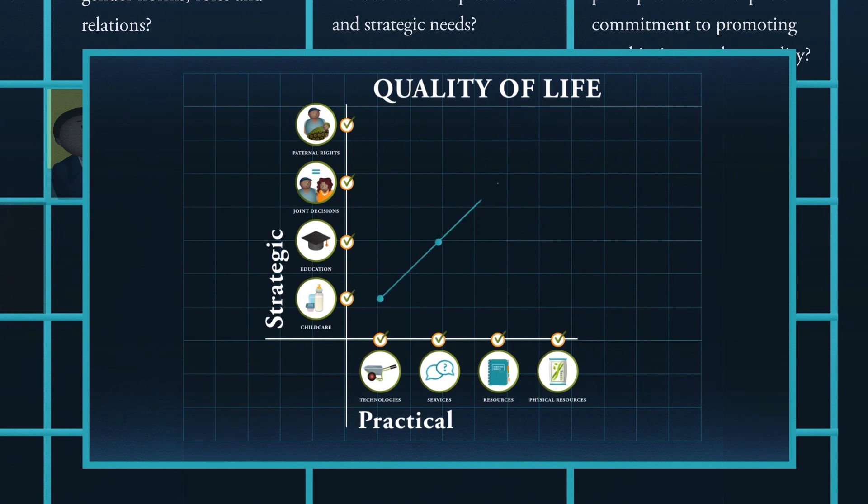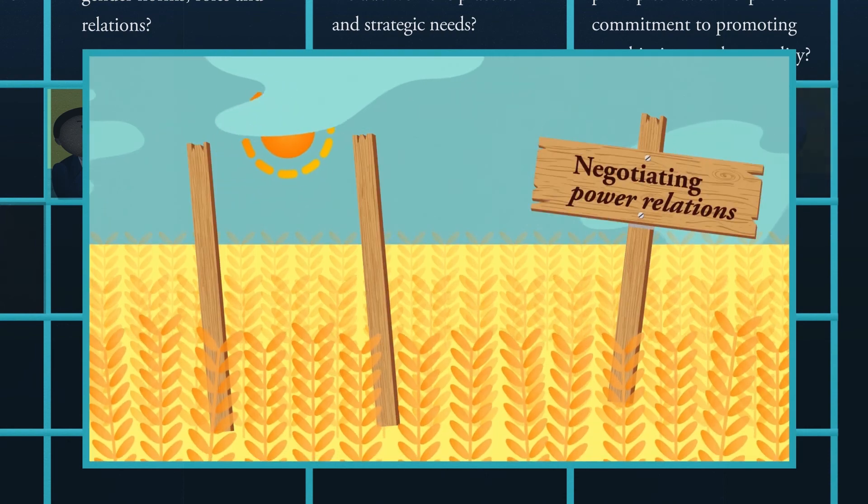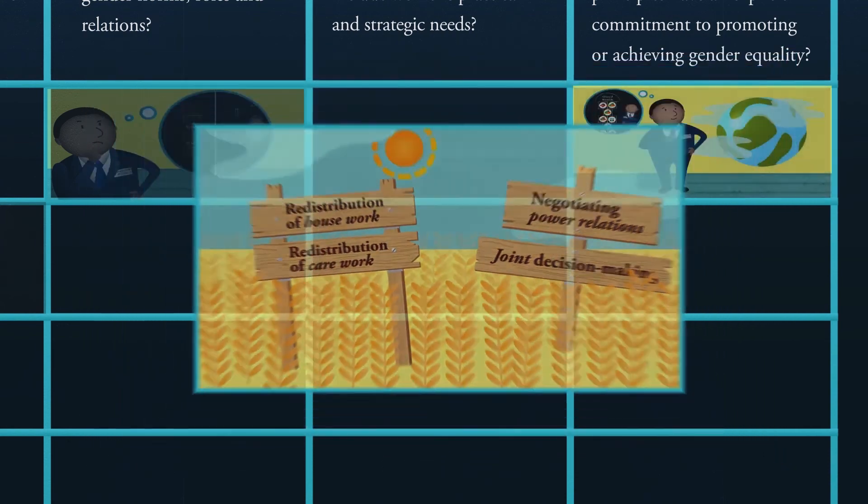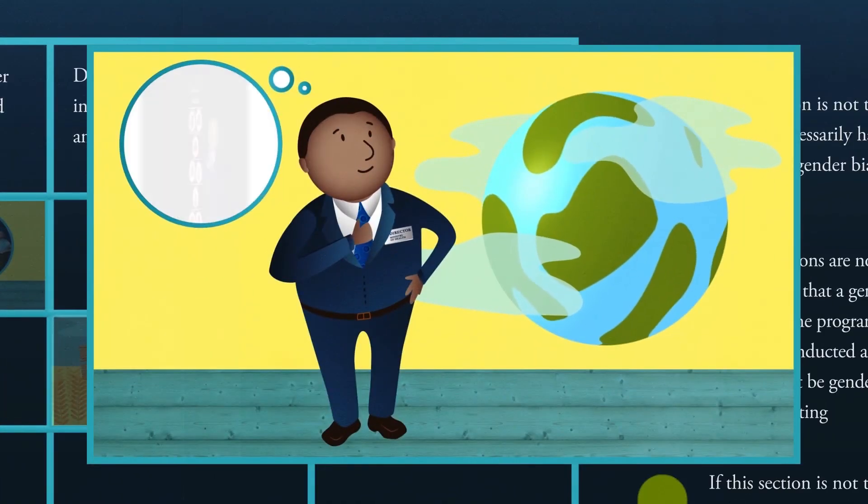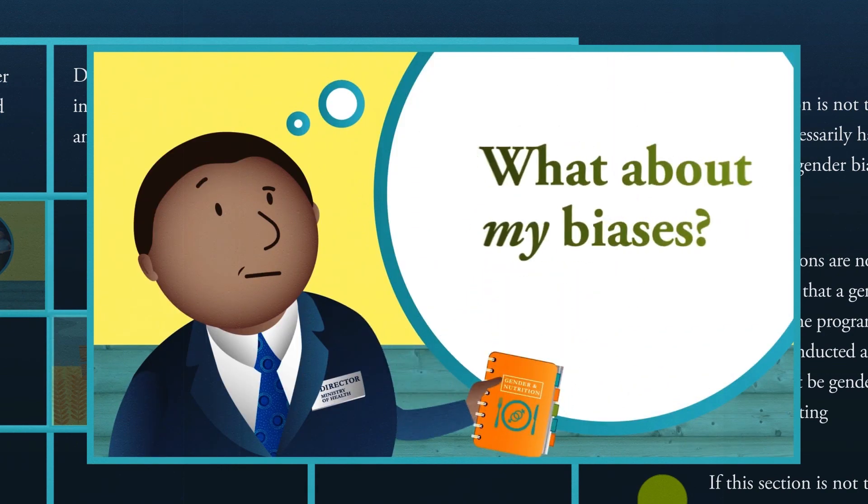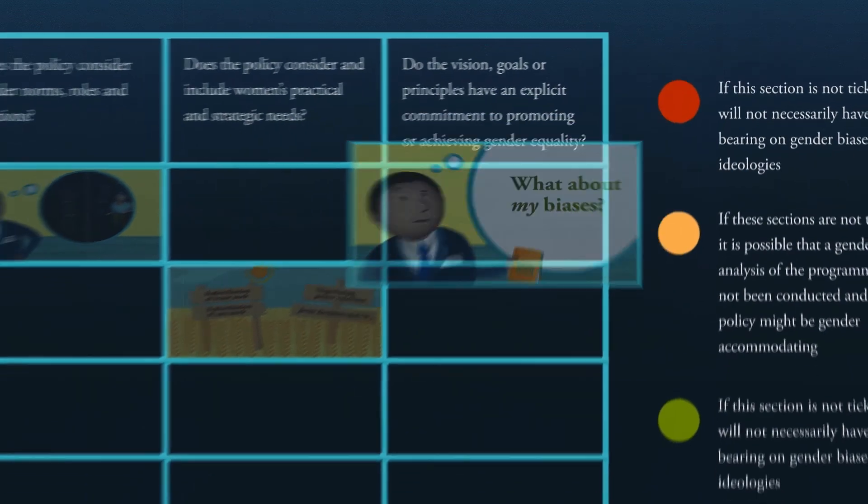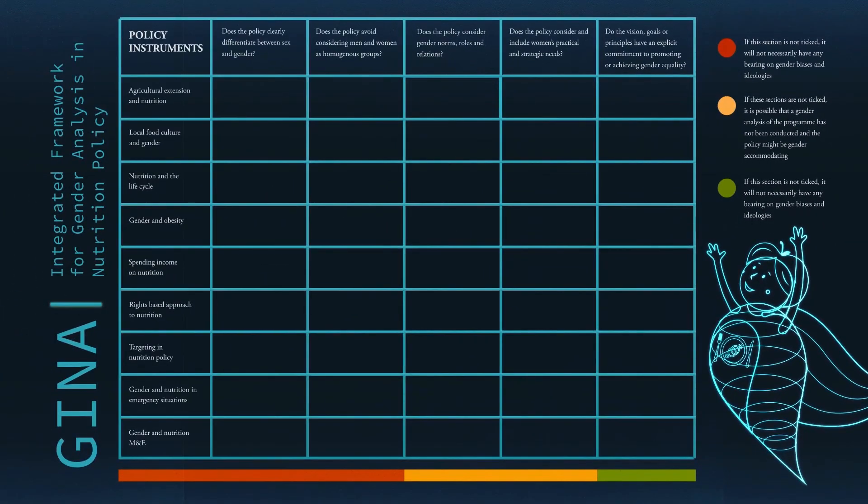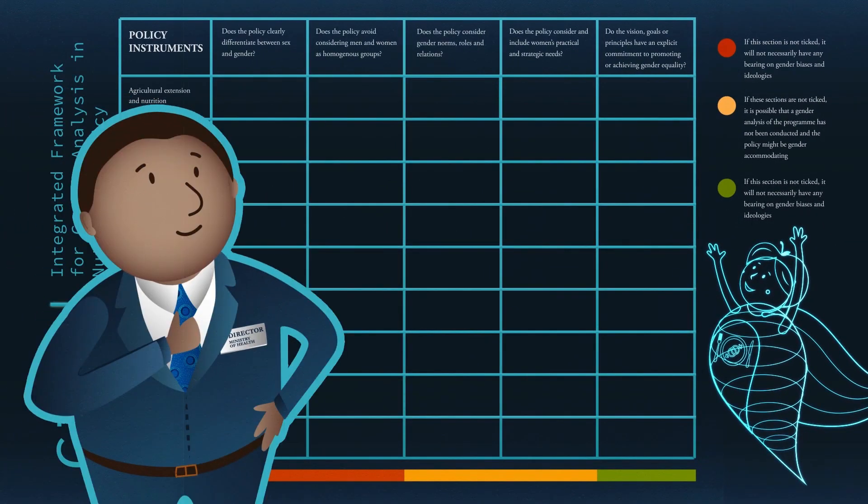He also addresses strategic needs to ensure successful implementation. Titus knows that his own understanding of gender can influence the policy. He can now reflect on his personal experiences of gender and develop a vision that is not influenced by his bias and ideologies.